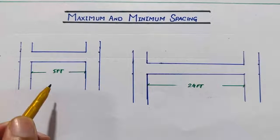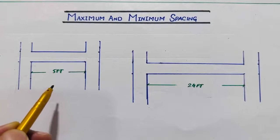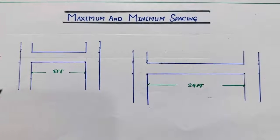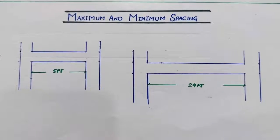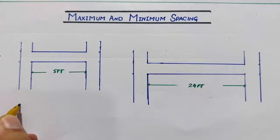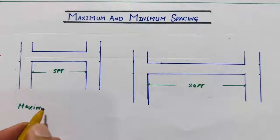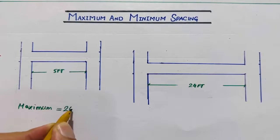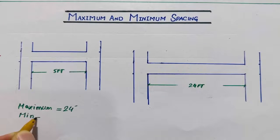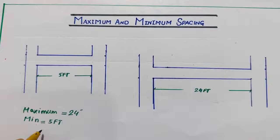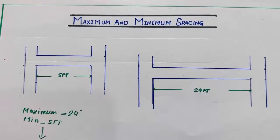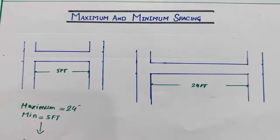The span between two columns is minimum five feet for G+1 story — it should not be less than this, otherwise the budget will increase if you keep minimum spacing everywhere. The minimum span is five feet and the maximum span between two columns is 24 feet for a normal residential building. Both of these apply for G+1 story, which means a double story.